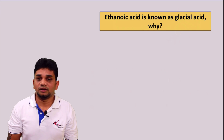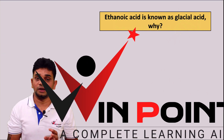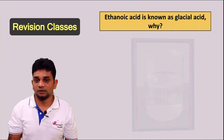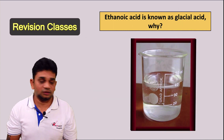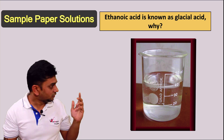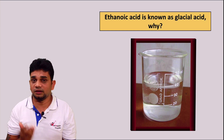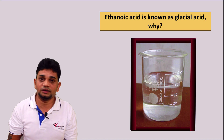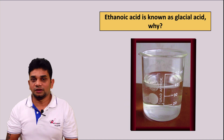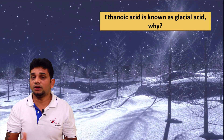Ethanoic acid is known as glacial acid. Why? The freezing point of ethanoic acid is 390 Kelvin. Here, you can see that ethanoic acid is in liquid state at normal temperature.